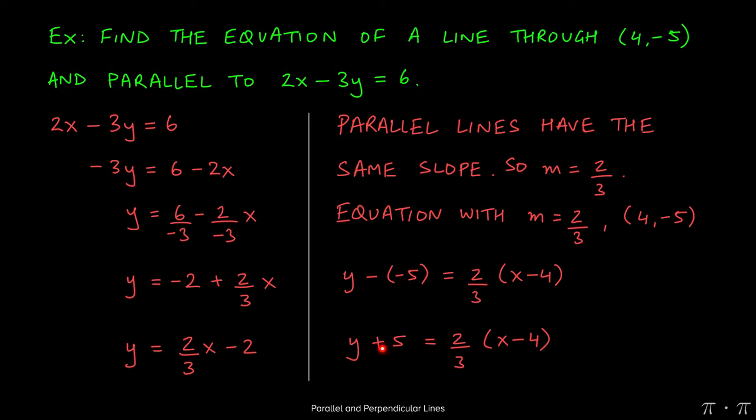Negative times a negative yields a positive. So the equation of this new line that passes through 4 comma negative 5 and is parallel to this line is y plus 5 equals 2 thirds times the quantity x minus 4.